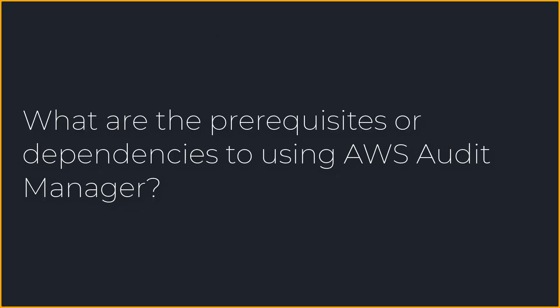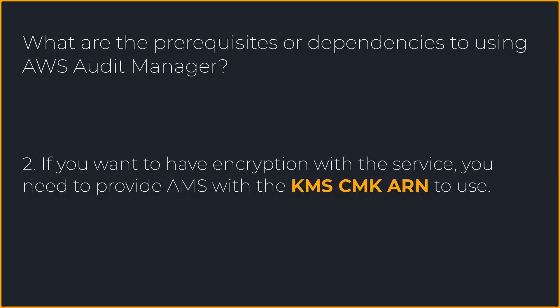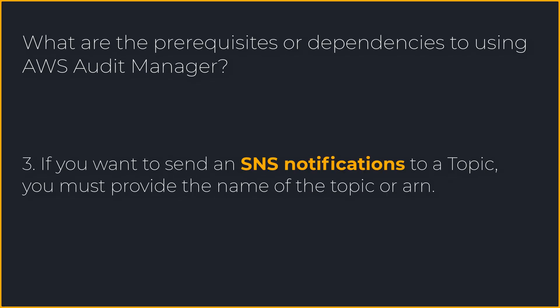What are the prerequisites or dependencies to using AWS Audit Manager? There are about four — the fourth being optional. First, you need to provide AMS with the S3 bucket where you want the assessment reports to reside. Second, if you want encryption with the service, you need to provide AMS with the KMS key — or CMK — to use. Third, if you want to send an SNS notification to a topic, you must provide the name of the topic or the ARN.